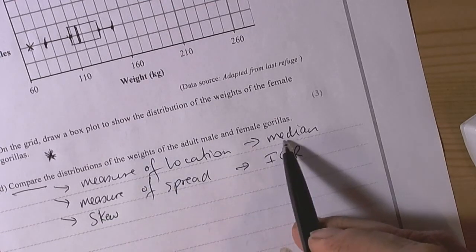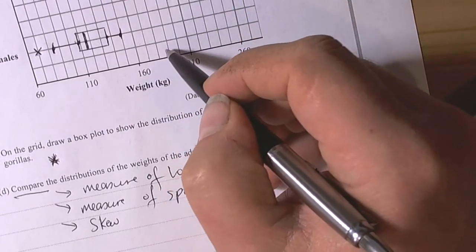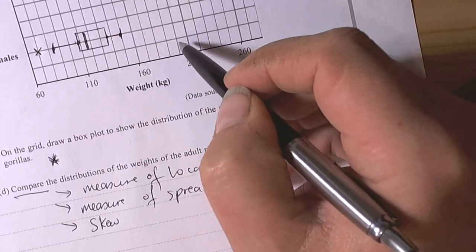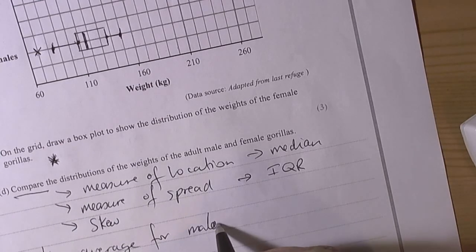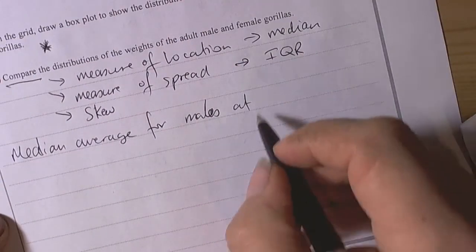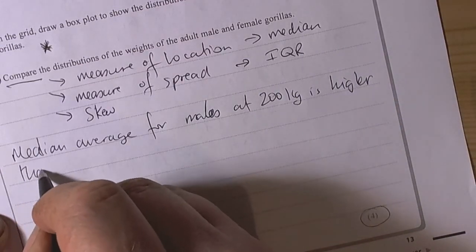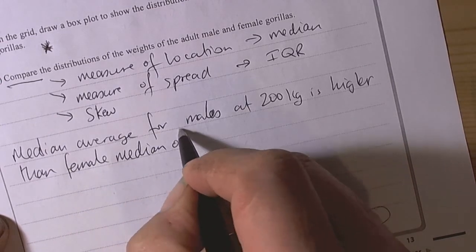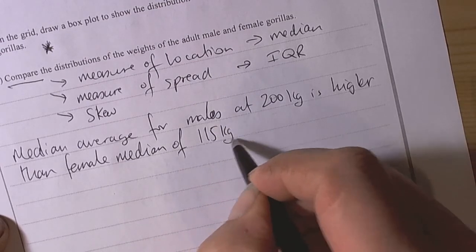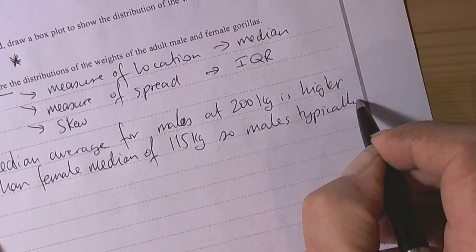So we can see for the measure of location the median. The median value for the males is 170, 80, 90, 70, 80, 90, 200. So median average for males at 200 kilograms is higher than female median of 115 kilograms. So males typically heavier.